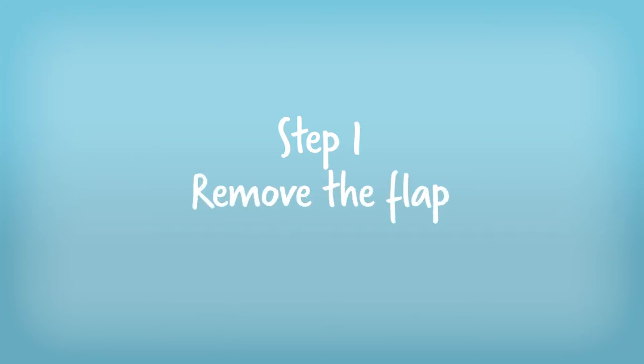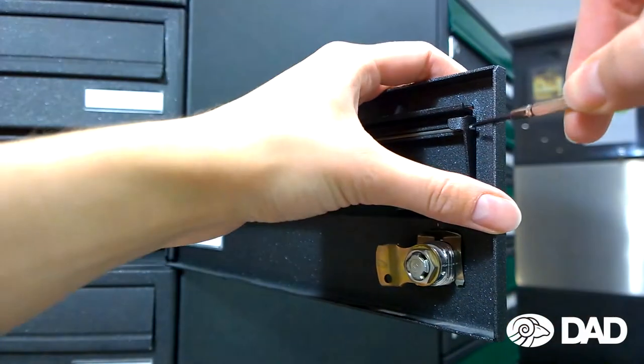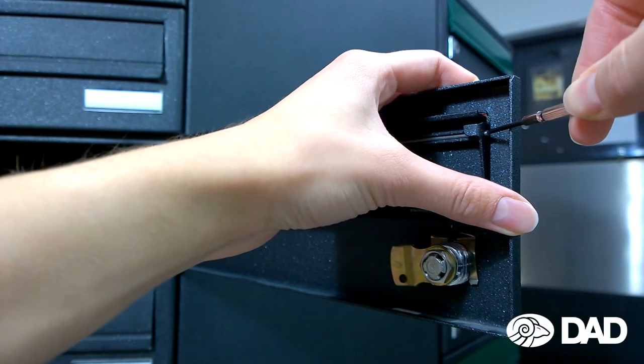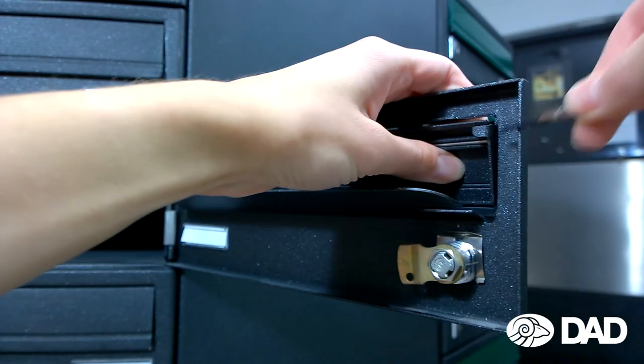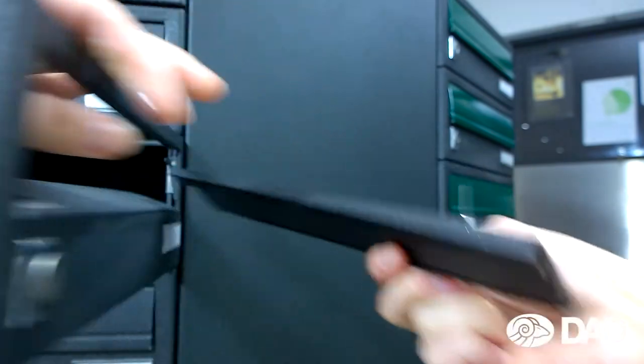Step 1. Remove the flap. You have to push a bar around the full length of the flap at one end, so it will fall away and you can then remove it.